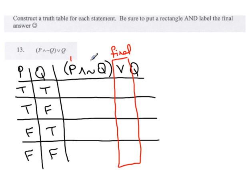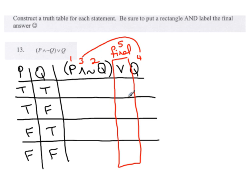Now I'm going to number the left side of the final in order of dominance. The least dominant would be column P — that's column one. Then 'not Q' is handled as a single column — column two. The most dominant on the left side is the conjunction — column three. Then move to the right side: there is only one thing there, so it is column four. The final will be column five, evaluated using columns three and four.